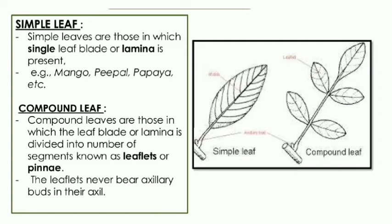In a compound leaf, the leaf blade or lamina is divided into a number of segments known as leaflets or pinnae. The key difference: in the axil of a simple leaf, we can see an axillary bud, but in the axil of leaflets in a compound leaf, there will be no axillary bud. A compound leaf with five leaflets has all five leaflets together making one leaf.